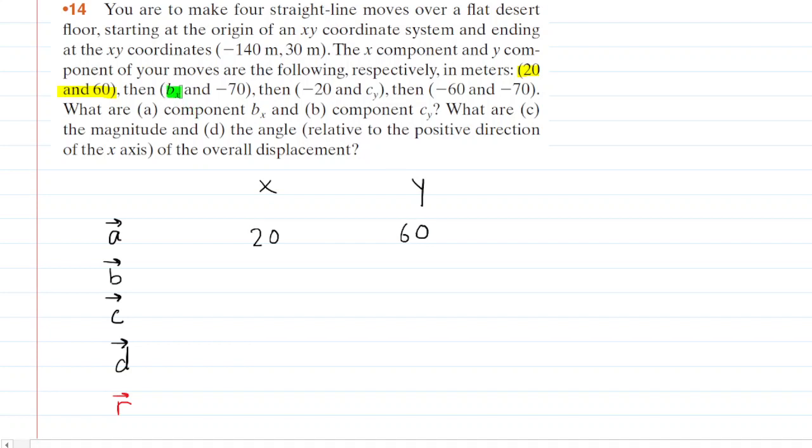The next vector has an unknown x component and a known y component. We'll fill in b sub x for the x component and negative 70 for the y component, and then we just proceed in a similar manner. So the next vector has an x component of negative 20 and an unknown vector in the y direction of c sub y, and then we have the final vector whose components are both known. They're negative 60 and negative 70.